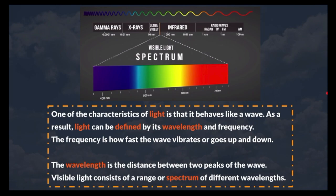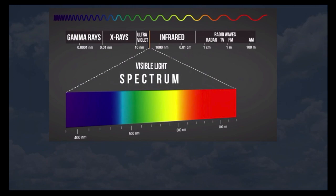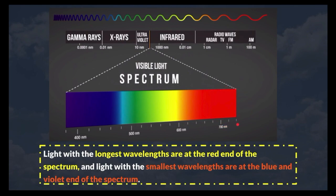The wavelength is the distance between two peaks of the wave. Visible light consists of a range or spectrum of different wavelengths. Light with the longest wavelengths are at the red end of the spectrum, and light with the smallest wavelengths are at the blue and violet end of the spectrum.